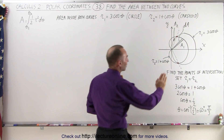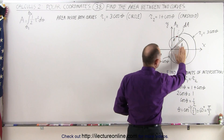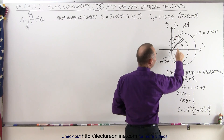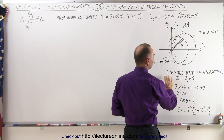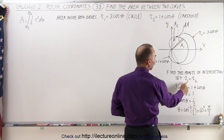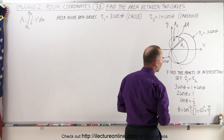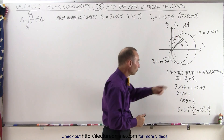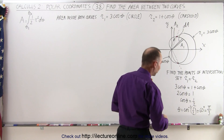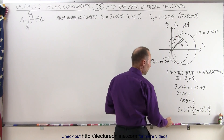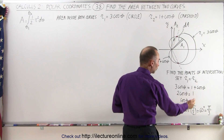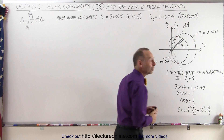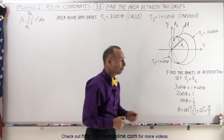We're talking about the area right in here. We need to find the points of intersection, so we set the two curves equal to one another: R1 equal to R2, 3 cosine theta equals 1 plus the cosine of theta. We find that cosine of theta equals 1/2, so the angle is 60 degrees or pi over 3.